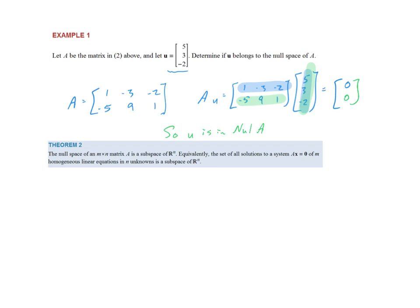We now encounter our first theorem in this section: the null space of an M by N matrix A is a subspace of R^n — using the term from section 4.1. Equivalently, the set of all solutions to AX equals 0 is a subspace of R^n. The second sentence just rewords the same thing.